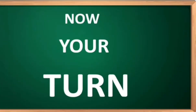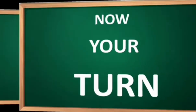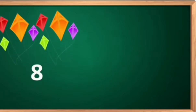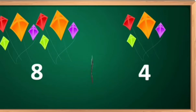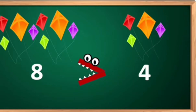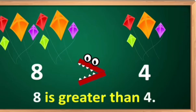Now it's your turn. See here — there are eight kites, and there are four kites. Which side will the crocodile open its mouth? Towards the number eight, because eight is greater than four.